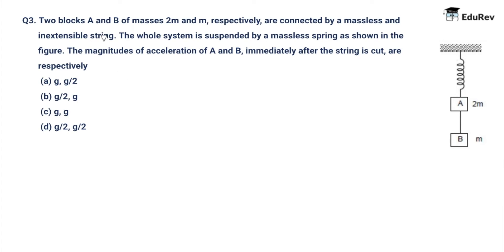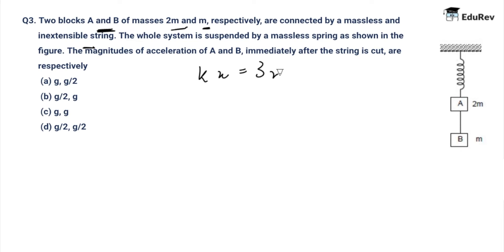Question number 3: There are two blocks A and B of masses 2M and M respectively, connected by a massless inextensible string, and this whole system is suspended by a massless spring. The magnitudes of acceleration of A and B immediately after the string is cut are to be found. In equilibrium, KX equals 3MG, and the tension in the string is 3MG minus 2MG, which equals MG.